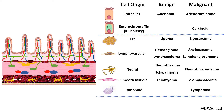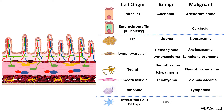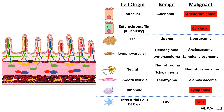The interstitial cells of Cajal, located in the muscular layer of the intestine, can give rise to tumors of just the various malignant potential. The four most common malignant tumors will be covered in Part 2.